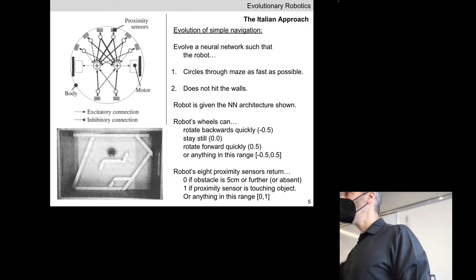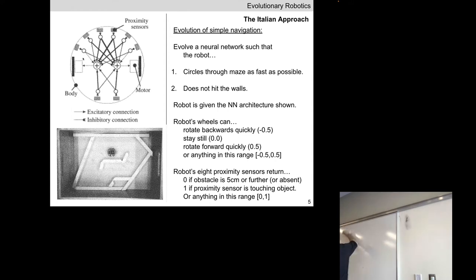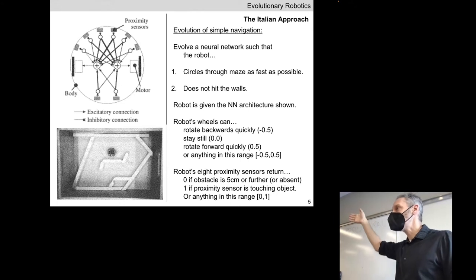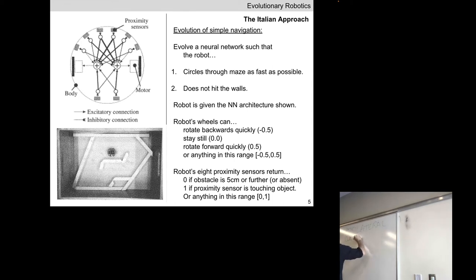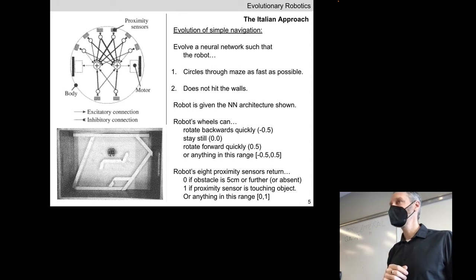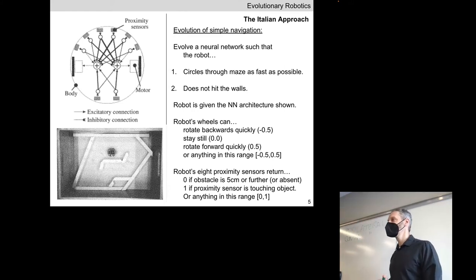The investigators had an intuition about this problem. Ipsilateral connections — 'ipsi' meaning same, 'lateral' meaning side — so the right-hand sensors attached to the right-hand motors have excitatory connections. The contralateral synapses — passing from the right side of the body to the left motor neuron and vice versa — have inhibitory connections. On the front and back of the robot it's all excitatory; the researchers said they didn't know in those cases. So we have excitatory ipsilateral and inhibitory contralateral connections.